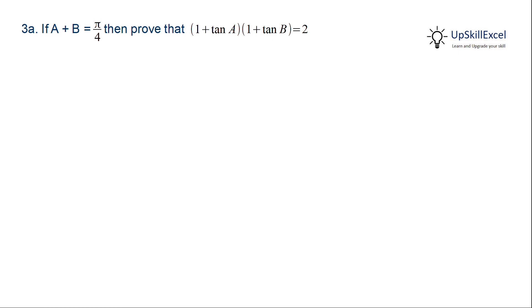If A plus B is equal to π by 4, then prove that (1 + tan A) multiply by (1 + tan B) is equal to 2.